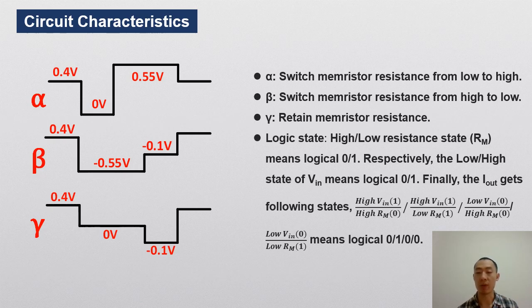The beta pulse will set logic 1 for the cell, because the beta pulse will switch the memristor resistance state from high to low. The gamma will retain the logic state for the cell, because it will not change the resistance state of the memristor.